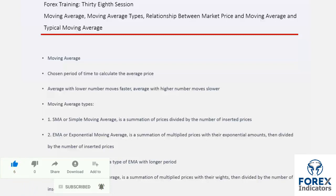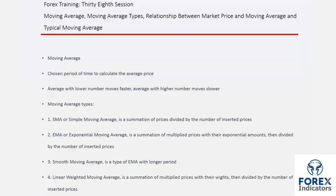SMA, or simple moving average, can be derived from the summation of price data divided by the number of data inserted.